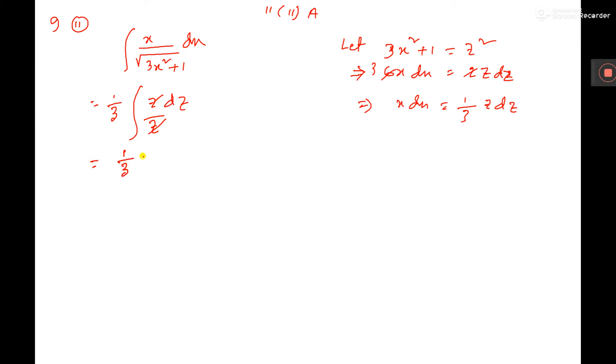So dz integration is z plus c, where c is arbitrary constant. Within dot you have to write, so what is the value of z: square root of 3x square plus 1 by 3 plus c. This is the required answer.